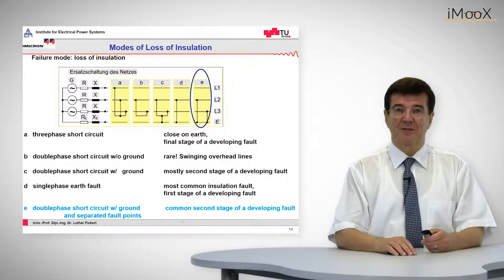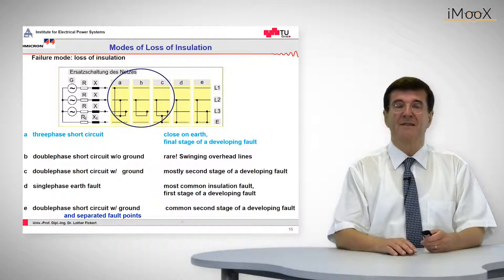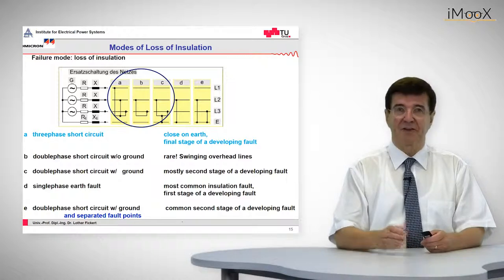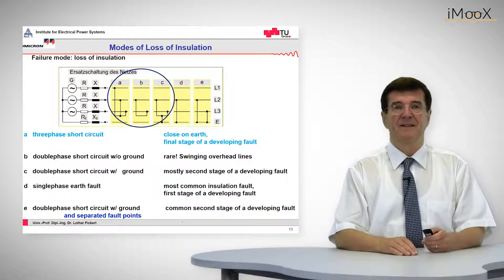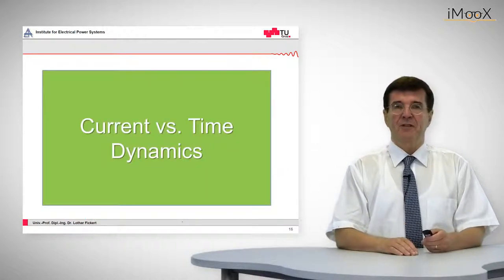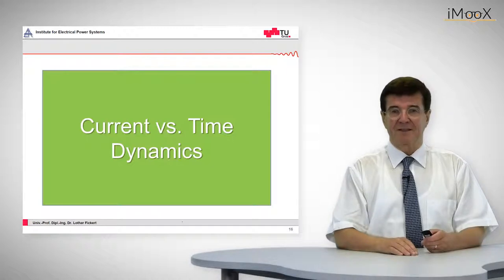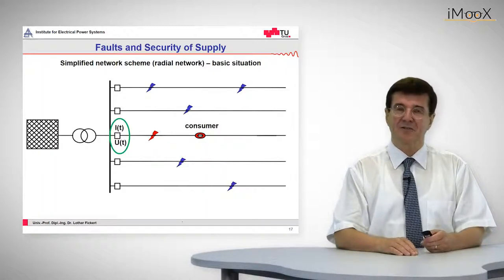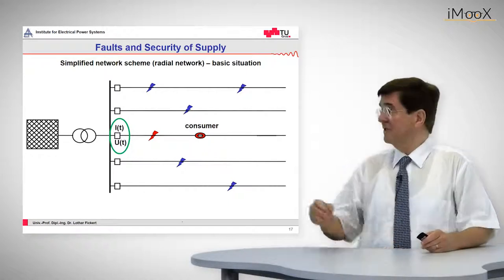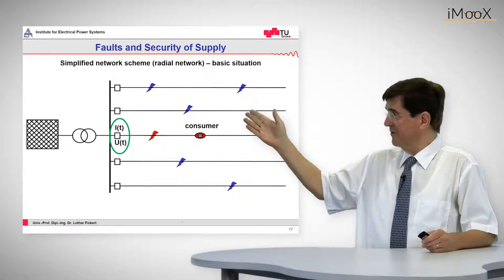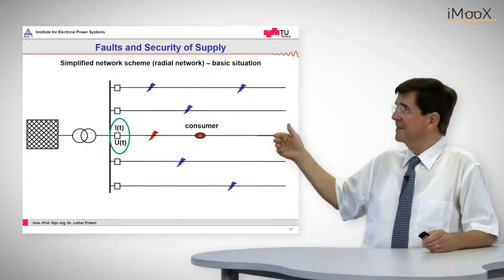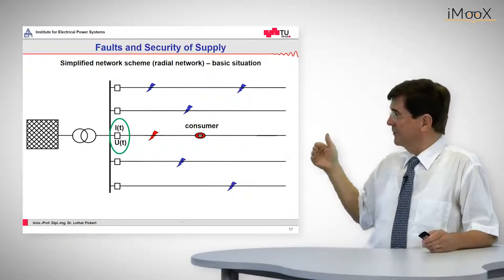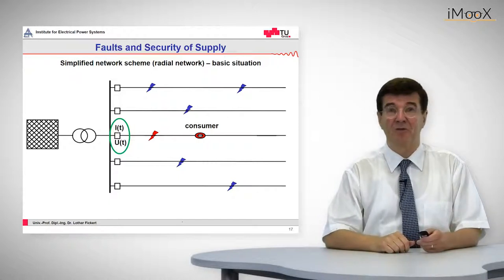In overcurrent protection I would like to deal with the typical short circuits — that is phase to phase, between three phases, and so on. First we look at the current versus time dynamics. Let's start with our standard grid which was already introduced. This is a radial grid. From left to right we have a grid, a transformer with a bus bar, a metering device given in green, and we have the line with the consumer where this fault will occur.